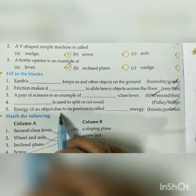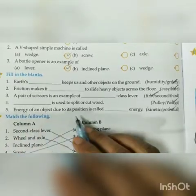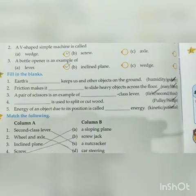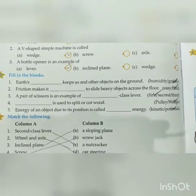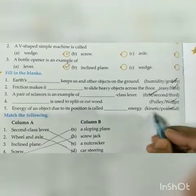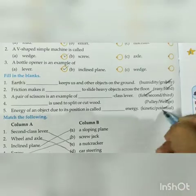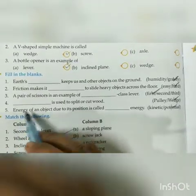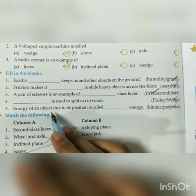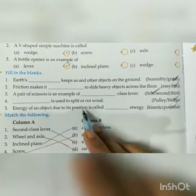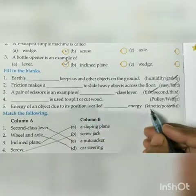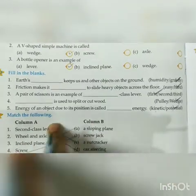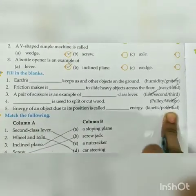Fifth blank: energy of an object due to its position is called potential energy. And if the question were about energy due to motion, the answer would be kinetic energy. But in this case, the answer is potential energy.